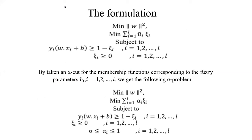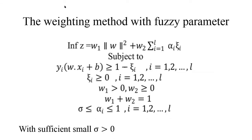The formulation of the fuzzy model. We get the following alpha problem. Then we use the weighting method to get the set of all efficient solutions. These equations of the weighting method where w1 and w2 must be w1 plus w2 equals one to avoid redundancy, and alpha i greater than or equal to sigma and smaller than or equal to one, with sufficiently small sigma greater than zero.